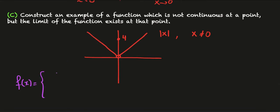Again if I write things a little more formally I'll have f of x is equal to the mod function for x not equal to zero and it's equal to four when x is equal to zero.